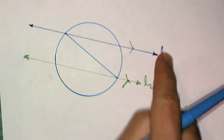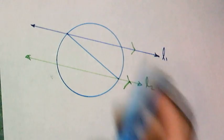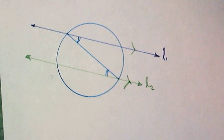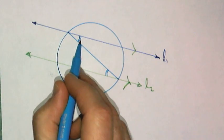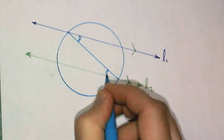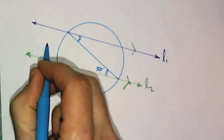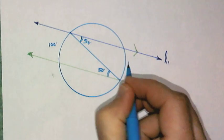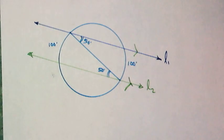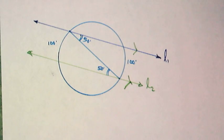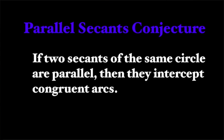But wait. Since l1 is parallel to l2, aren't these angles congruent by alternate interior angles? Yes, they are. If those angles are congruent, then this is half of this. If that's 50 degrees, then this has to be 100. And since this is congruent to this, if this is 50, then this would have to be 100. So no matter what, if we have two parallel secants, this will happen. And our conjecture would be, if two secants of the same circle are parallel, then they intercept congruent arcs.